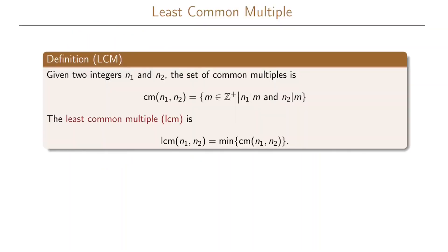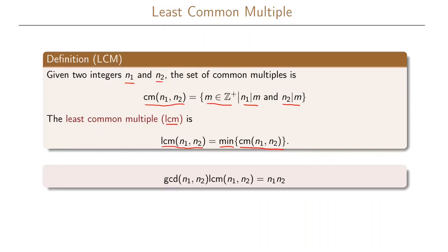Another notion is that of the least common multiple. Given two integers n1 and n2, the set of common multiples is denoted as cm of n1 and n2, and these are all positive integers m such that n1 divides m and n2 divides m. The least common multiple, abbreviated as LCM, is then the lcm of n1 and n2 — defined as the minimum of the set of common multiples of n1 and n2. A useful property is that the greatest common divisor of two numbers multiplied by the least common multiple of the same numbers equals the product of n1 and n2.